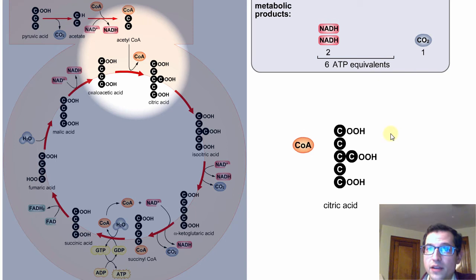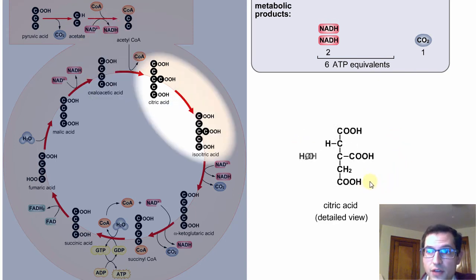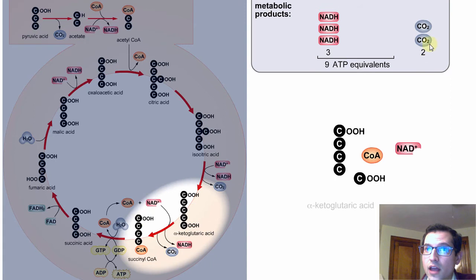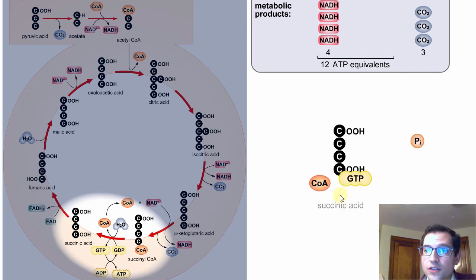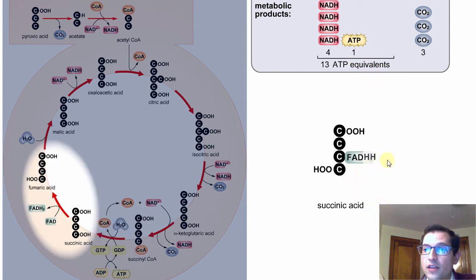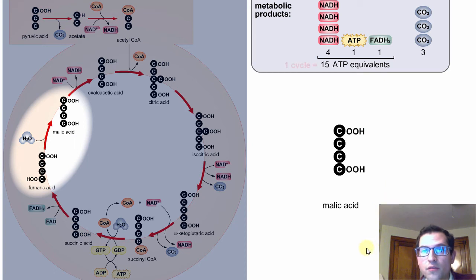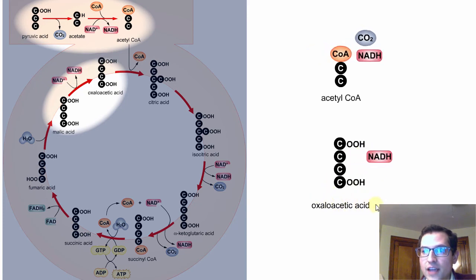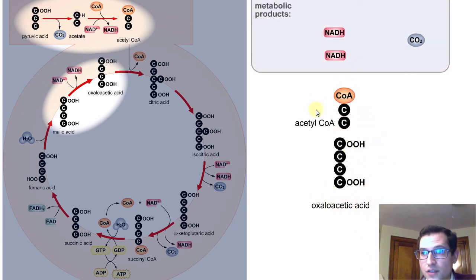So here comes acetyl-CoA. It's binding to oxaloacetate forming citric acid, also known as citrate. We can see a little rearranging occurs. We now call this molecule isocitrate or isocitric acid. There's our first NADH from the citric acid cycle and carbon dioxide as well. Here's our next NADH and our next carbon dioxide. Here's our GTP, which immediately goes and produces some ATP. Here's our FAD forming FADH2. And this combination of water with this molecule fumarate or fumaric acid forms malic acid, which then recharges one more molecule of NAD+ into NADH. There it goes. And there we have our oxaloacetic acid again. And we are about to start the cycle over at the beginning.